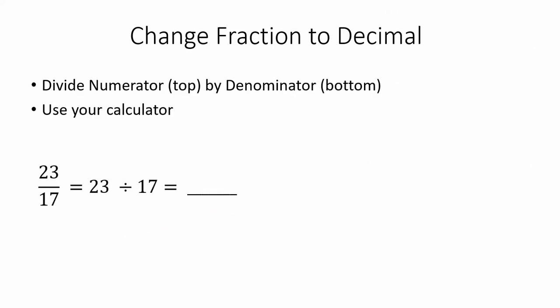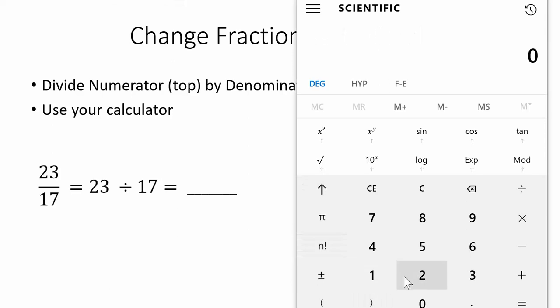Let's try another one. 23 seventeenths. That means we'll take 23 divided by 17. Again, use your calculator. 23 divided by 17.